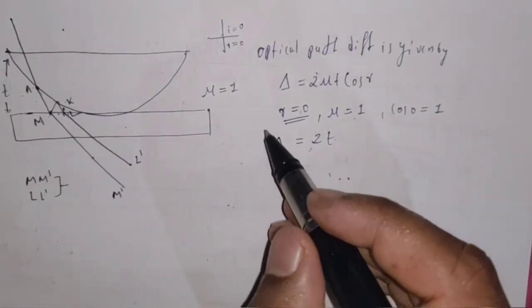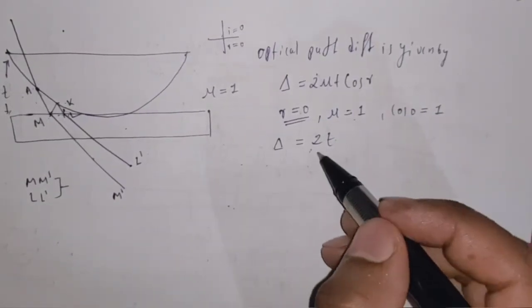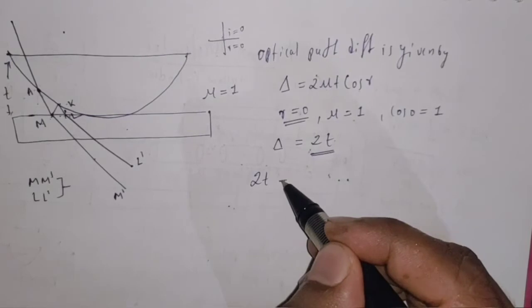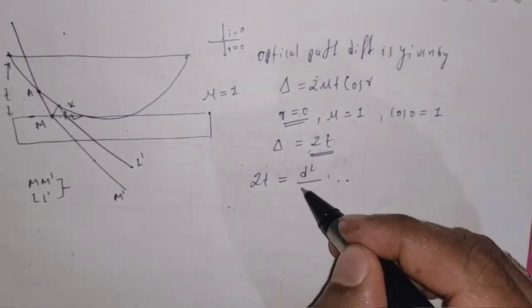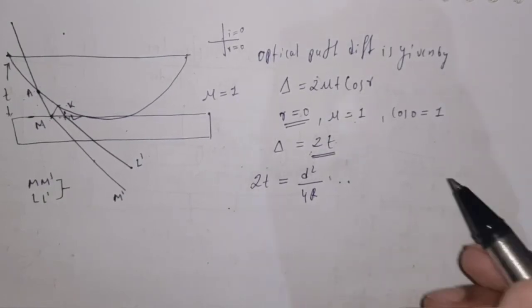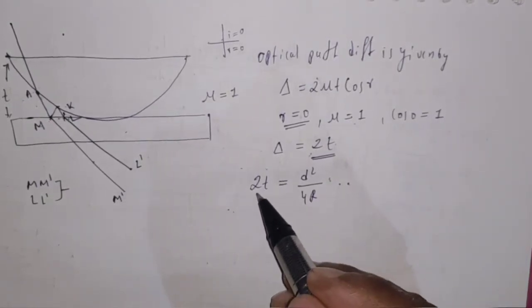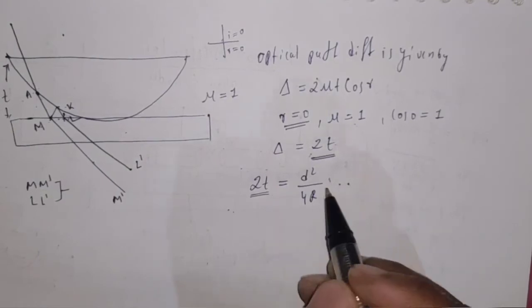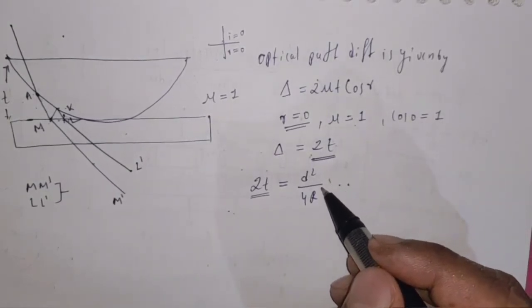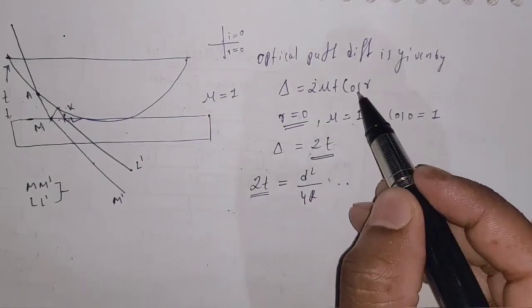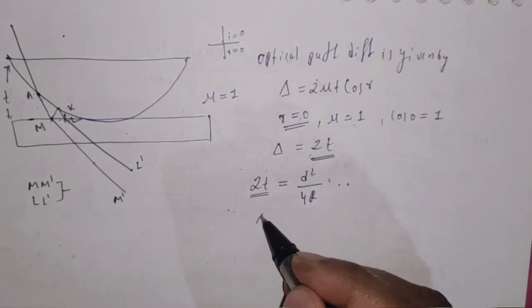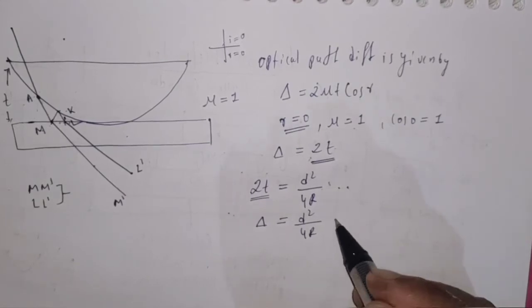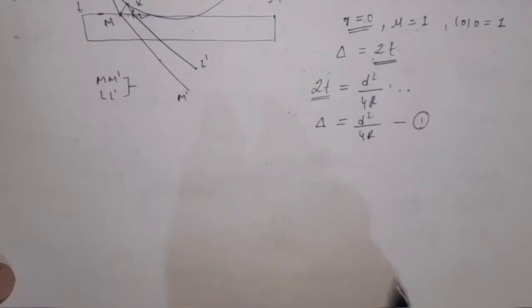In the last video, for the case of reflected light, we derived that 2t equals D squared divided by 4R. We are directly using this result here. Substituting this value into the path difference equation, we get the optical path difference: delta equals D squared divided by 4R. Let us represent this as equation 1.